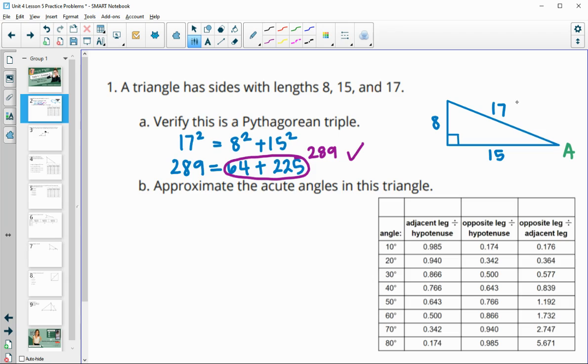So the hypotenuse is 17, and the adjacent is 15. So when I do the adjacent side divided by the hypotenuse in this triangle, I'm taking 15 and dividing it by 17. When we do 15 divided by 17, we get a decimal of 0.882.